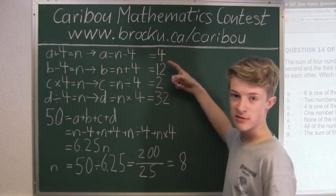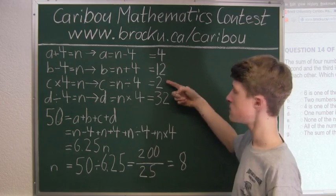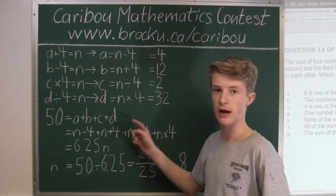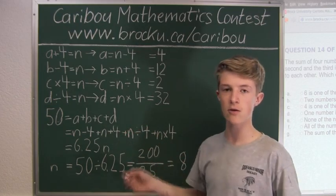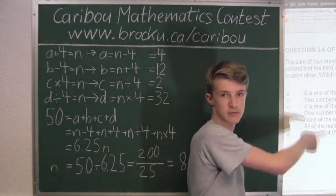Four plus twelve is sixteen. Plus two is eighteen. Plus thirty-two is fifty. So it adds up to fifty. And we know the common result is eight. So now we can take a look at the options.